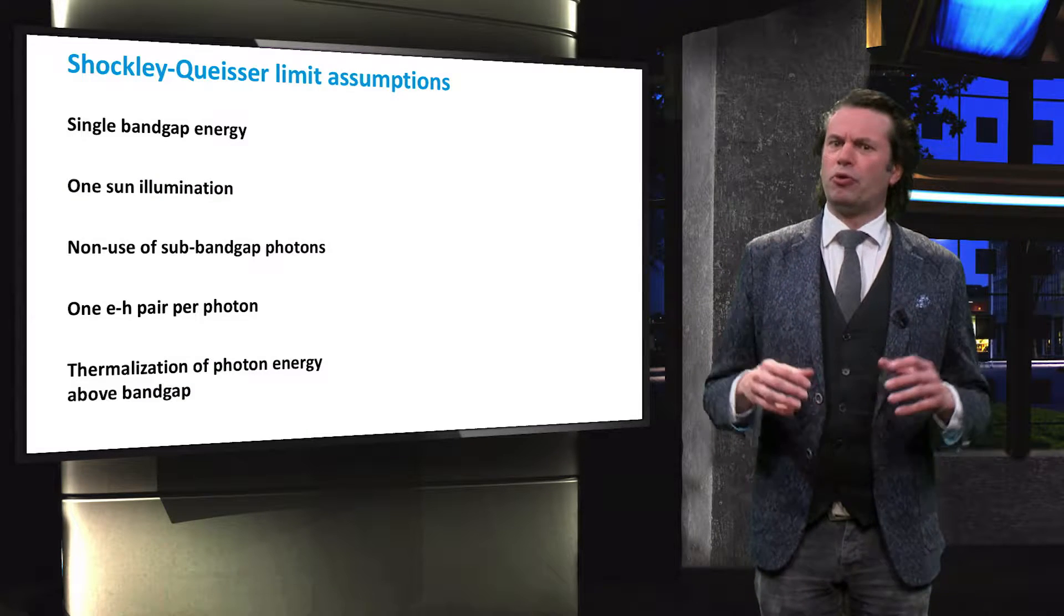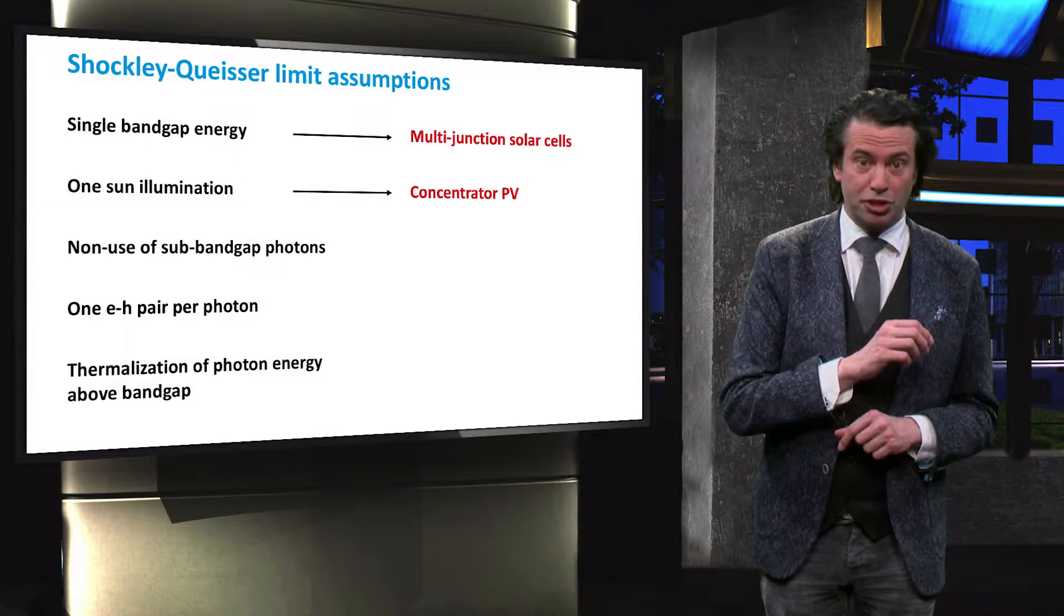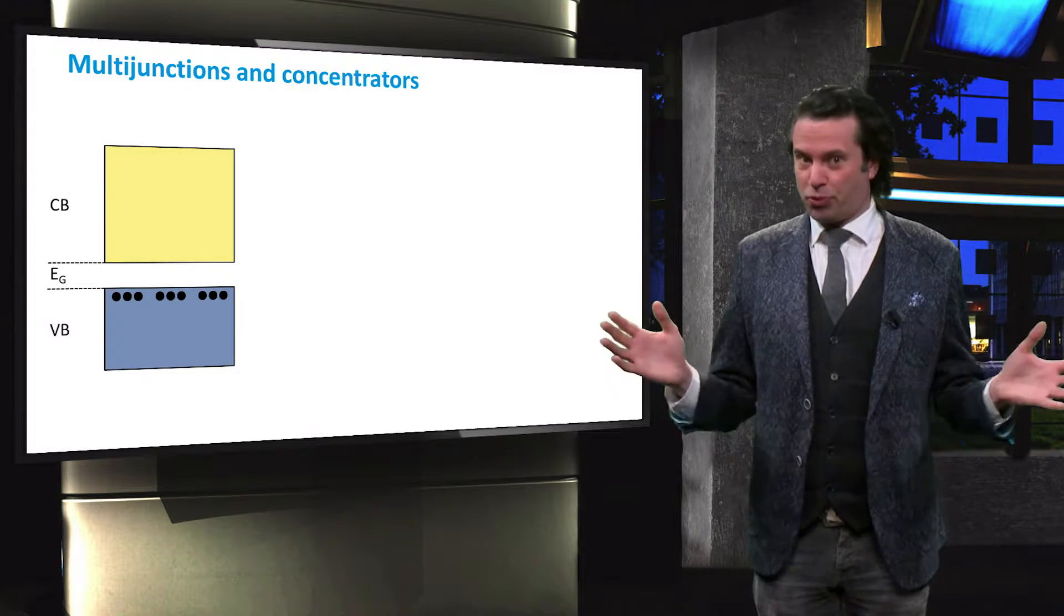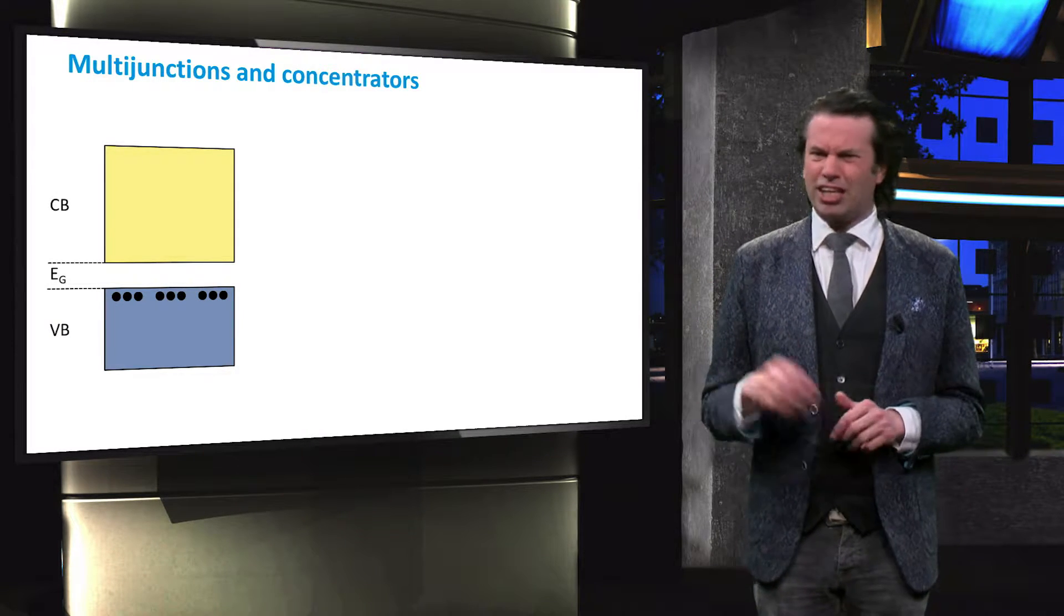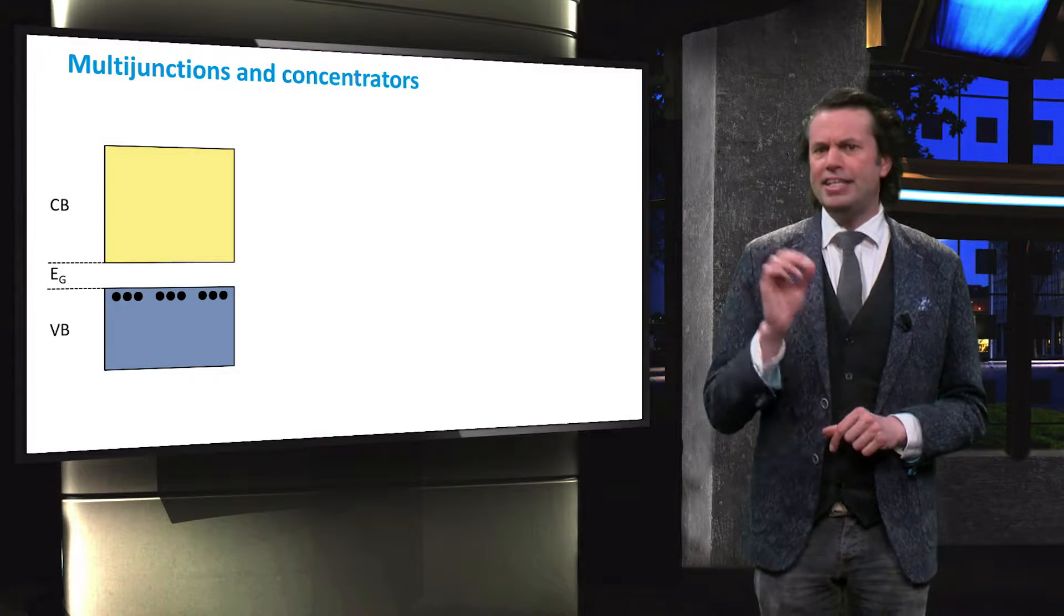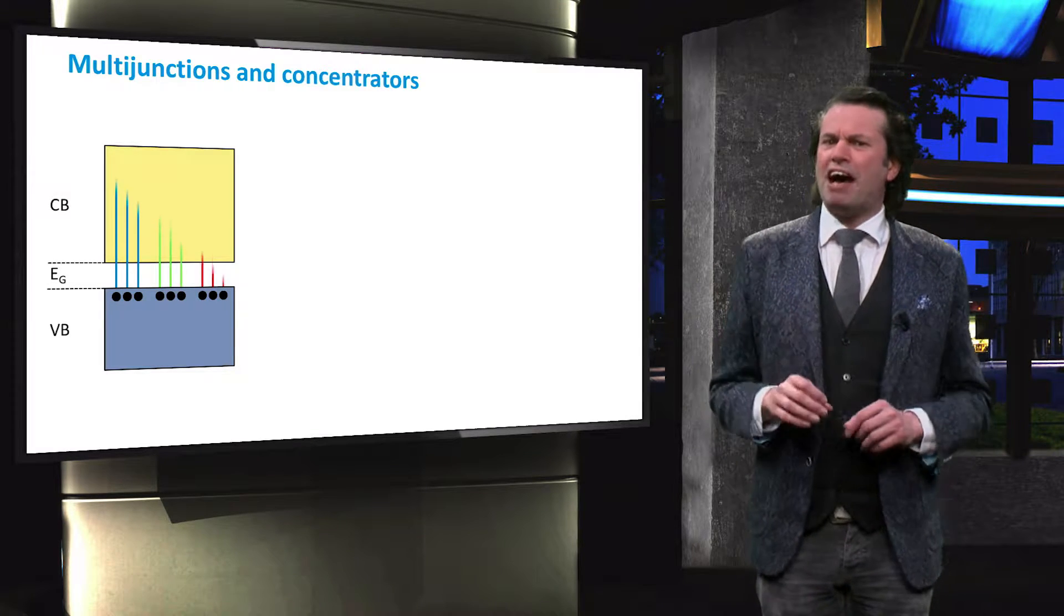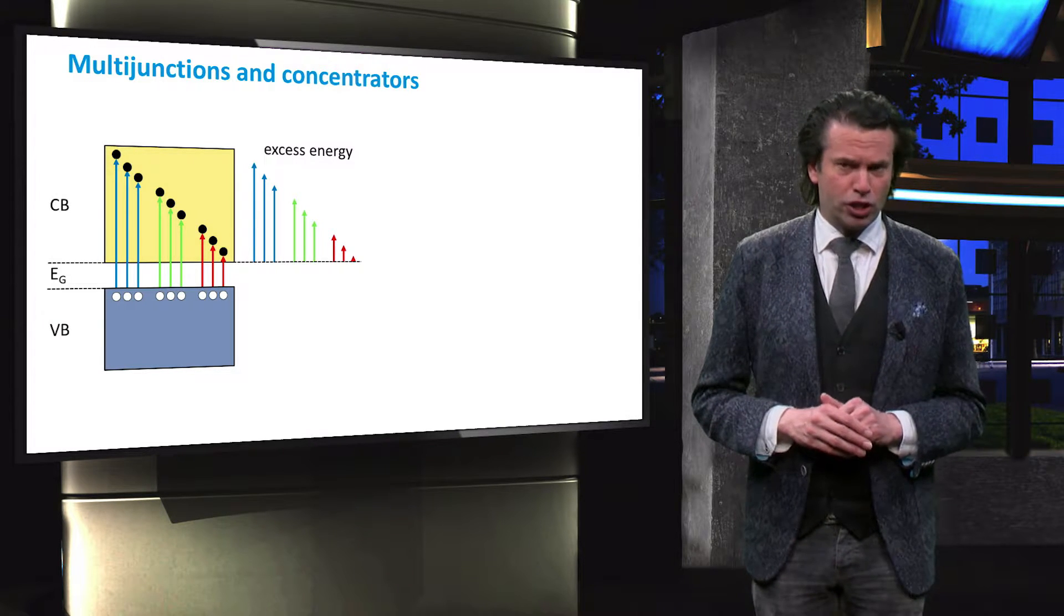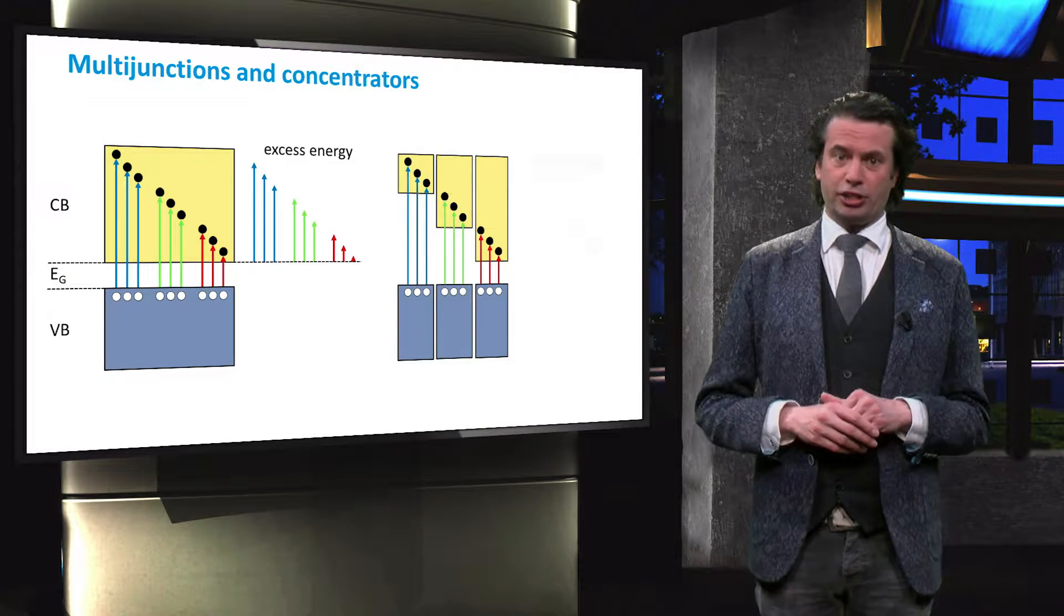During this course we already discussed two concepts that challenge these assumptions, namely multi-junction solar cells and concentrator PV. Depending on which expert in photovoltaics you would talk to, multi-junction solar cells and concentrator systems are seen as part of the second or third generation photovoltaics. In these solar cells, multiple absorbers are combined with different bandgap energies. Rather than having a single bandgap energy resulting in a large amount of excess energy for high energy photons, the multiple bandgap energies reduce the amount of excess energy and therefore the thermalization losses.